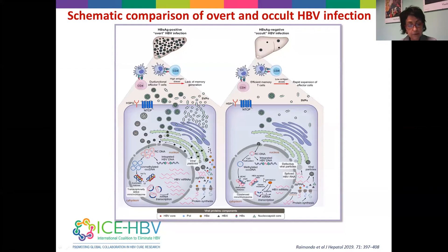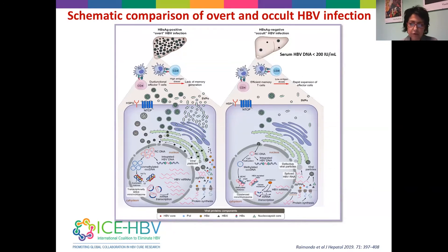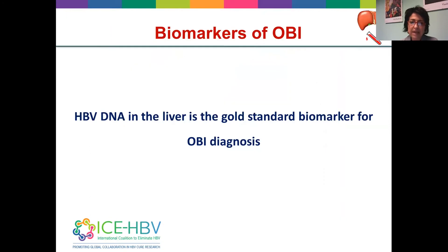Therefore, when serum HBV DNA is detectable, it is invariably in a low viremic range — usually less than 200 international units per ml — and may only be intermittently detected. Based on this and the agreed definition of OBI, HBV DNA in the liver is the gold standard biomarker for OBI diagnosis.